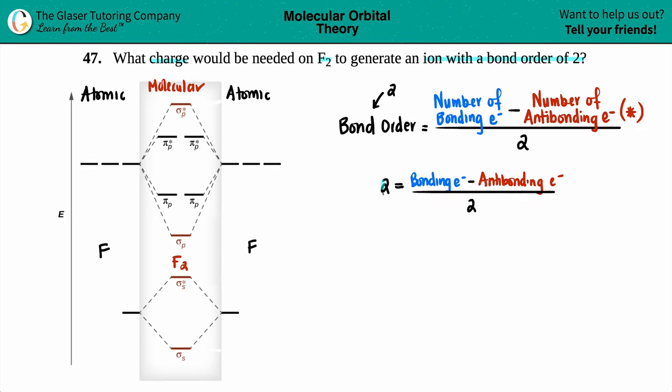I'm going to say two equals the number of bonding electrons minus antibonding electrons divided by two. And now let's just solve, cross multiply, right? Two times two. So I get basically four equals my number of bonding electrons minus my antibonding.